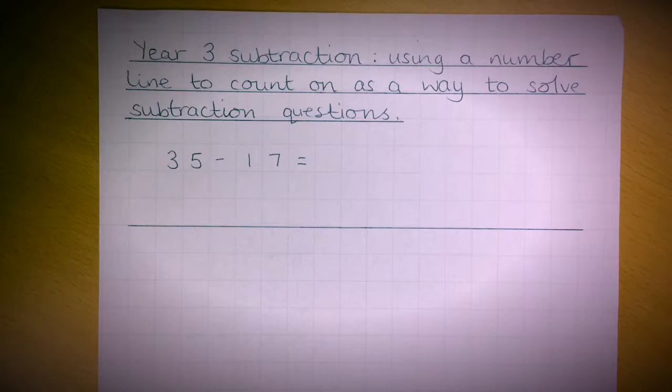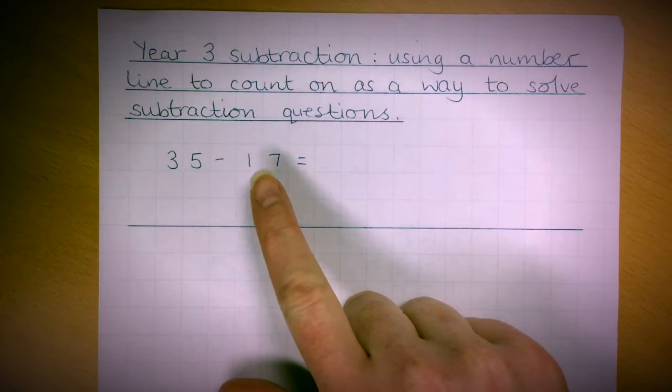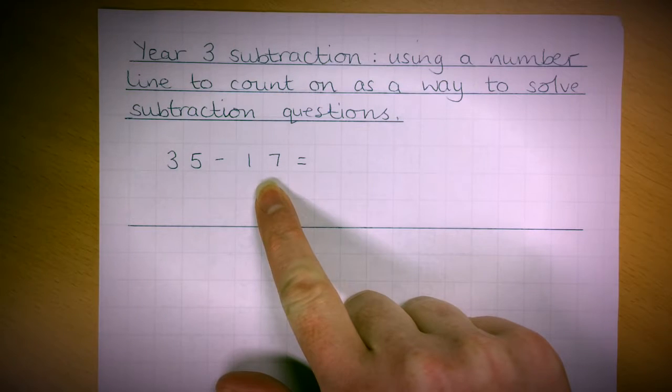This is Mrs. Gray going through two methods of solving subtraction questions. The first is using a number line to count on. For example, I would start from 17 and count on to see how many it would take to get up to 35.